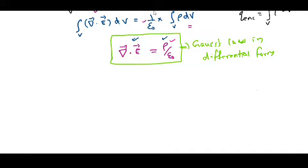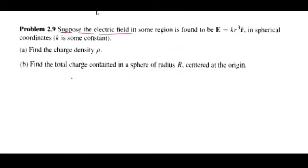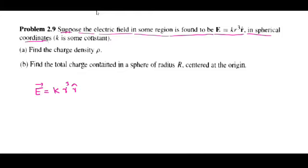Now let us do a problem. Most of the time we have to write this divergence in spherical polar coordinates, cylindrical polar coordinates, or Cartesian coordinates. Suppose the electric field in some region is found to be E = kr³r̂ in spherical coordinates, where k is some constant. Find the charge density. The relation between E and ρ comes from Gauss's law in differential form: ∇·E = ρ/ε₀, so ρ = ε₀(∇·E).